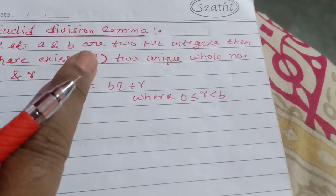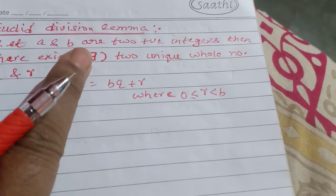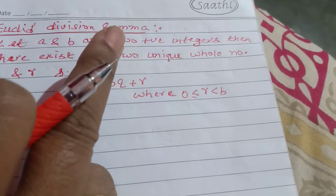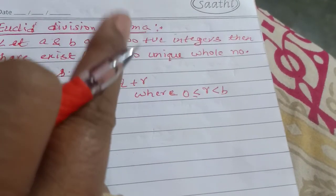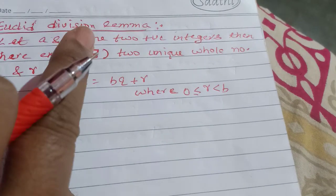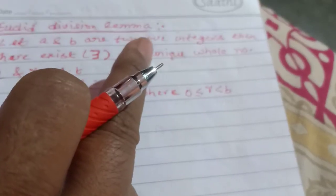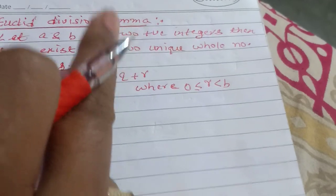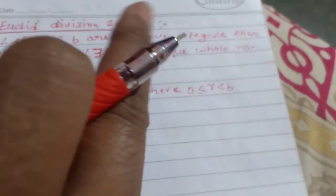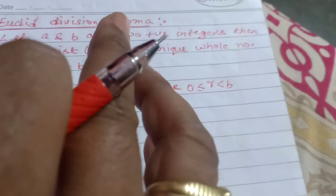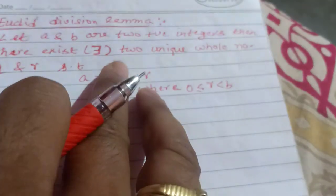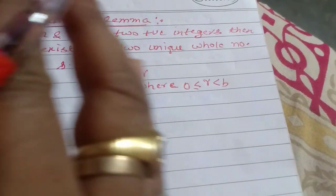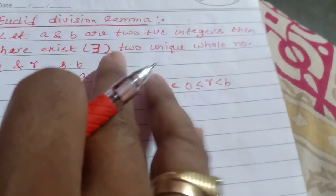Euclid's Division Lemma is a statement that we use to prove other statements. A lemma is a proven statement that is used to prove another statement.